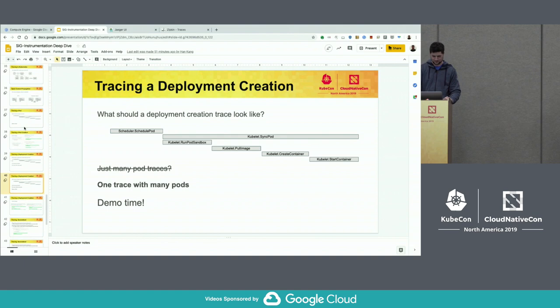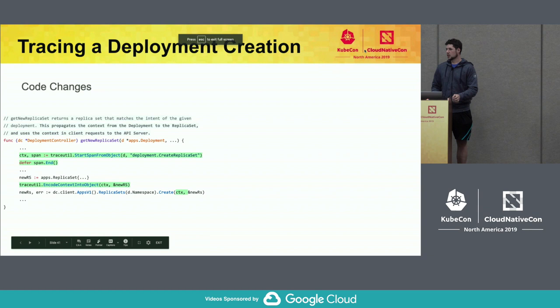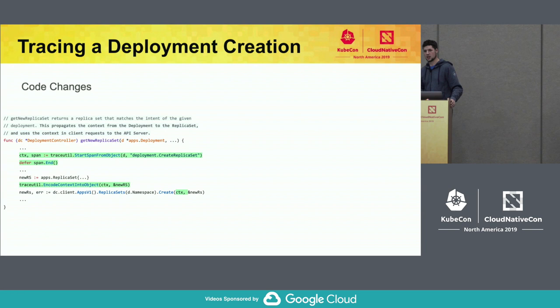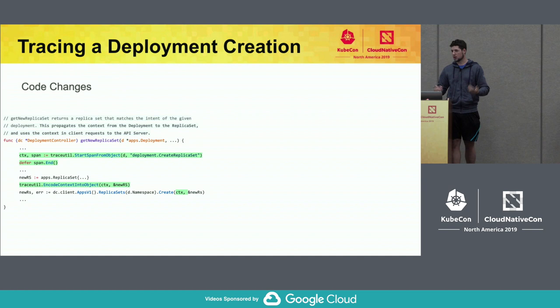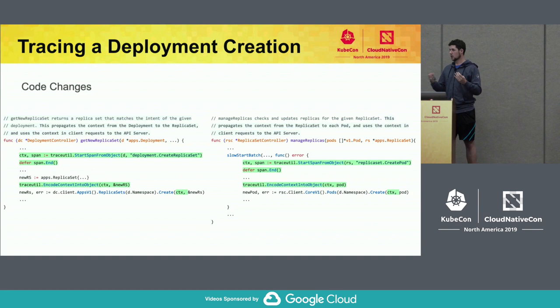What did I have to do to make that work? It's actually not that hard. For the deployment controller, I added a span for creating the replica set. But instead of taking that context and passing it to a gRPC call to the container runtime interface, I'm taking that context and sticking it in the object I need to create. Right before I create my replica set, I just say 'replica set, here's your context,' and now all the things associated with that replica set are tied back to my deployment creation. Same thing for the replica set creating a pod — start a span and stick the context inside the object.